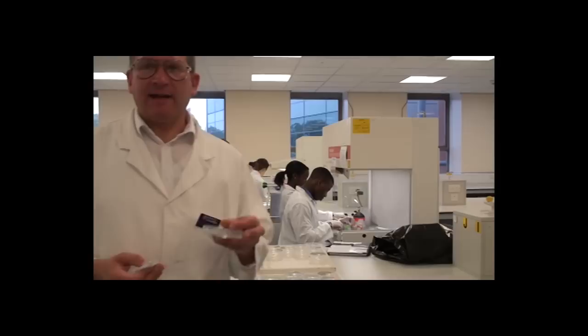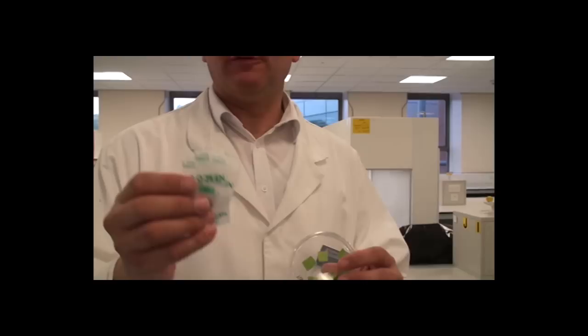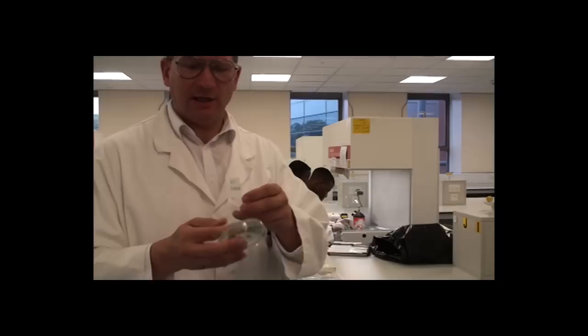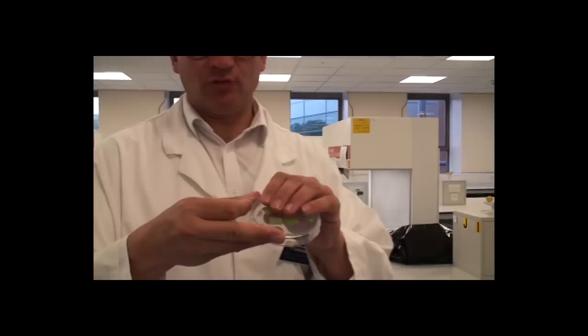After we've completed the tissue culture, we then have to seal the plates, and we do that with this parafilm, NESCO film. We take a piece of that and put it onto the side of the plate, and then stretch it round in order to give a good seal so that the tissue doesn't dry out and remains sterile.